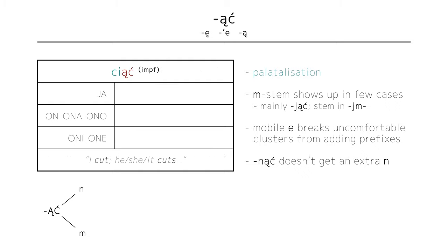In cases such as ciąć, to cut, the soft consonant, in this case ć, depalatalizes to the hard t. Tnę, I cut, tnie, he, she, it cuts, tną, they cut.